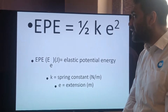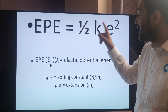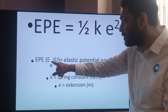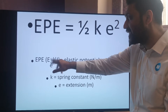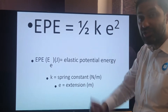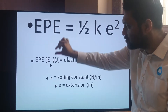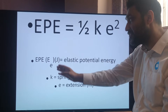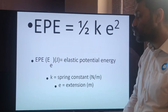Here's another equation to learn: EPE equals half K times E squared, or 0.5 KE squared. You can write it as EPE, or as a capital E with a subscript — a little 'e' at the bottom to show elastic energy. Similarly, kinetic energy uses a little 'k' subscript, and gravitational potential energy uses a little 'p'. EPE stands for elastic potential energy and is measured in joules, since it is energy.